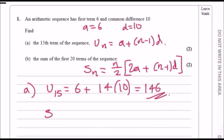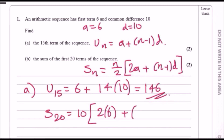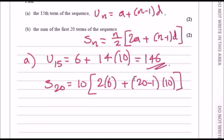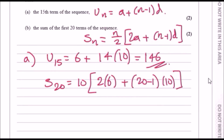For the sum of the first 20 terms, plug in n equals 20: you get 20 over 2, which is 10, times (2 times 6 plus (20 minus 1) times 10). If you enter this correctly you should get a total result of 2020.